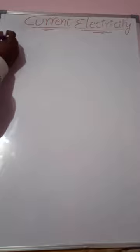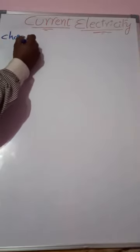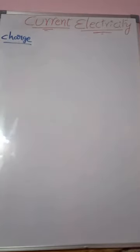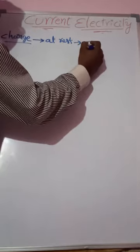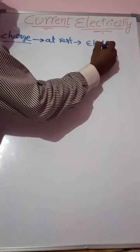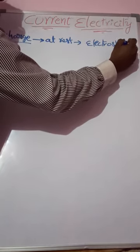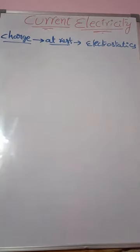Good morning students. Today we are discussing current electricity. In this topic, first of all we know about charge. In the previous lesson we already learned that charge is a physical quantity which is affected by both magnetic and electric fields. When the charge is placed at rest, it is represented as electrostatics.